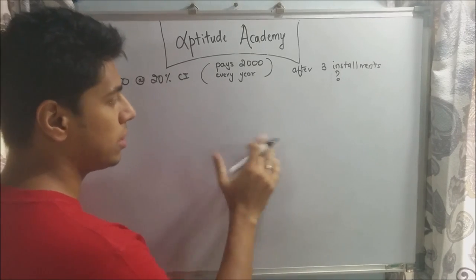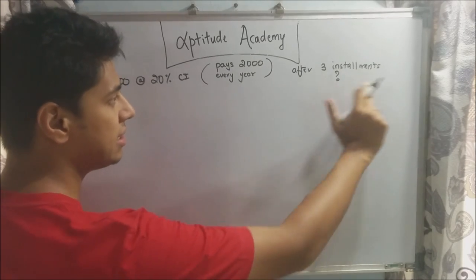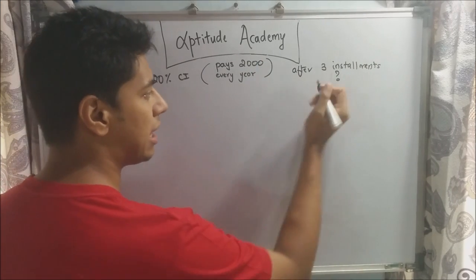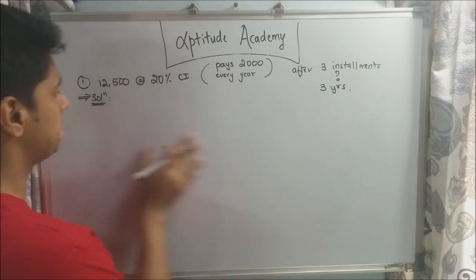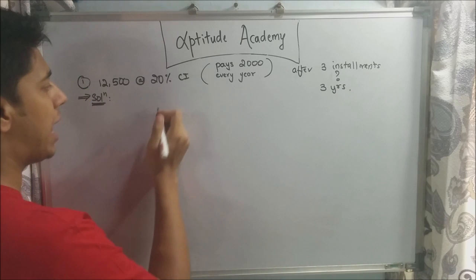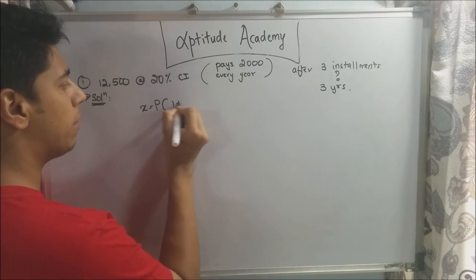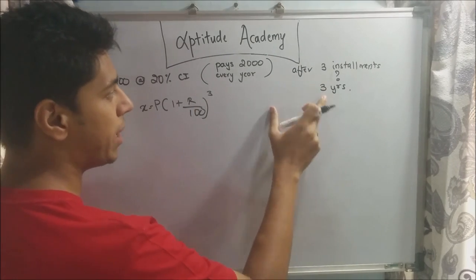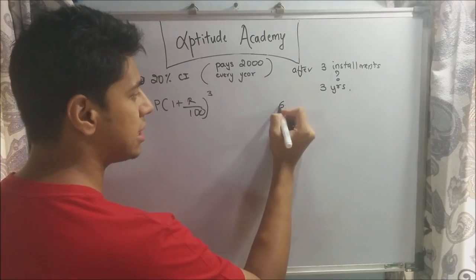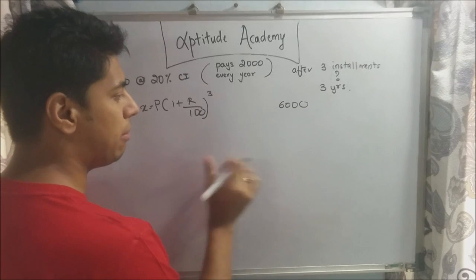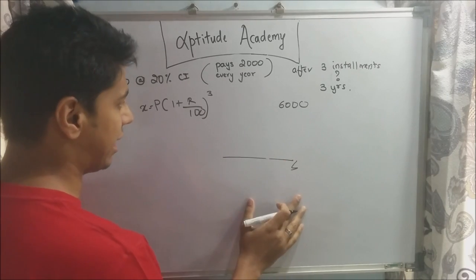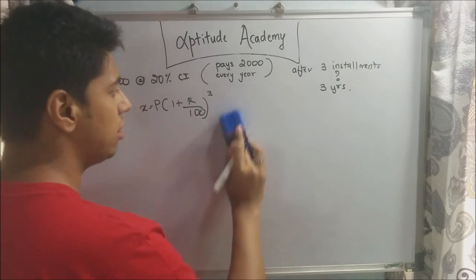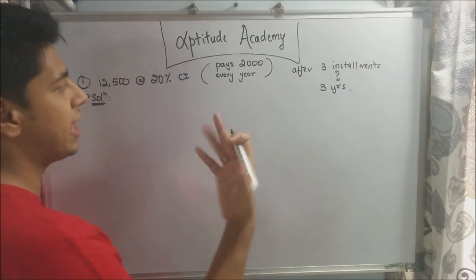We need to find the amount remaining after 3 such installments, which means after 3 years. You might be tempted to calculate X = P × (1 + R/100)^3 directly and subtract 3 × 2,000 = 6,000. This will be one of the options but is incorrect. For compound interest, the principal keeps changing, so we must calculate year by year, subtracting Rs. 2,000 each time and recalculating.